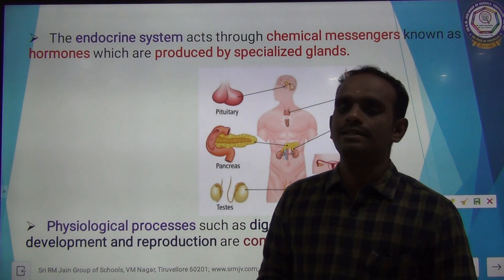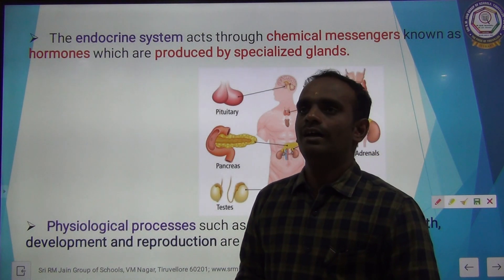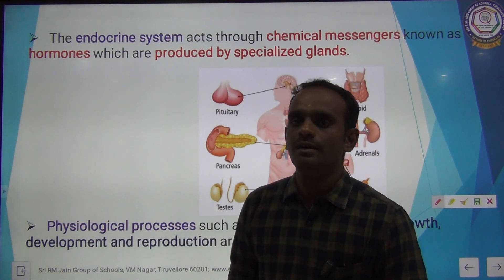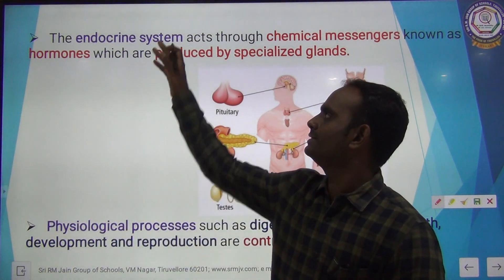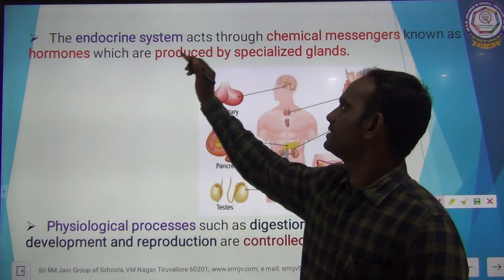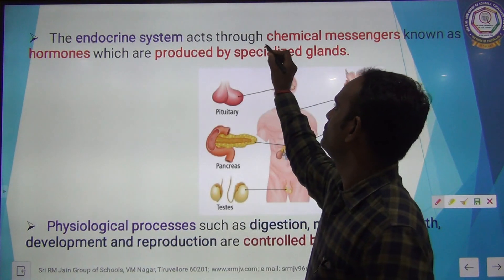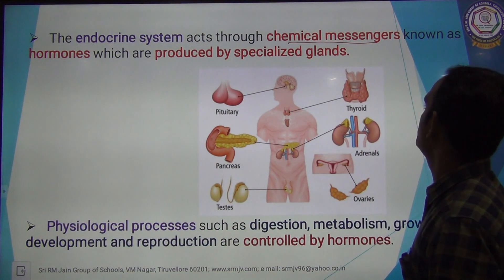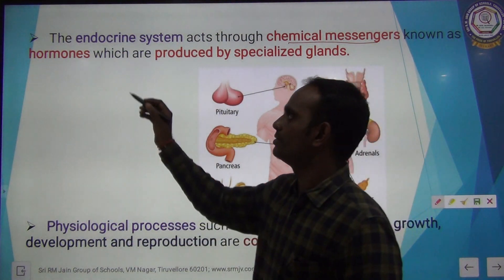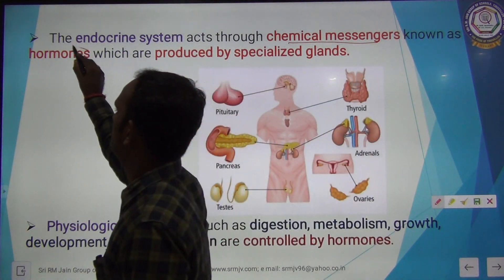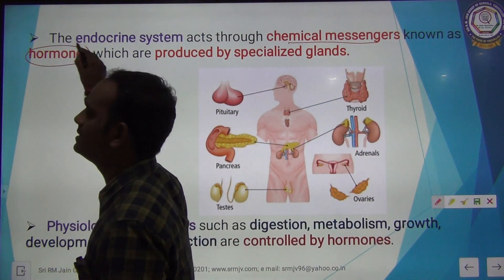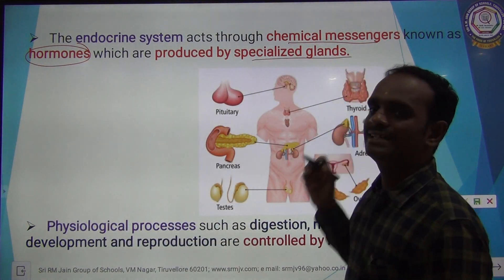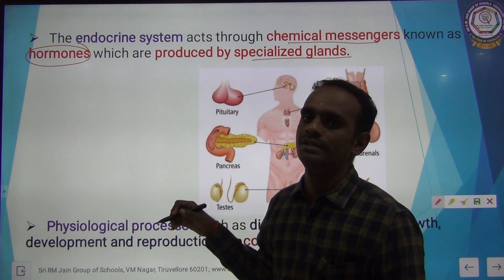The endocrine system — you know, there are 10 different organ systems in our body. One among them is the endocrine system. The endocrine system acts through chemical messengers known as hormones. Hormones are the chemical messengers produced by specialized glands in the body.